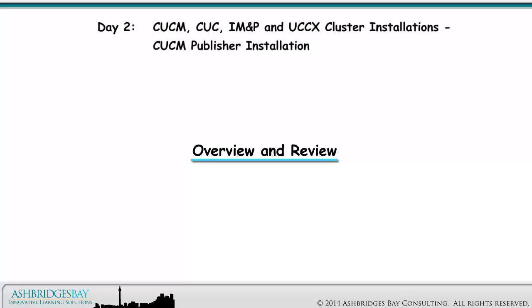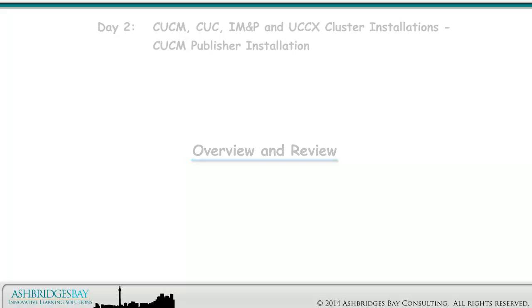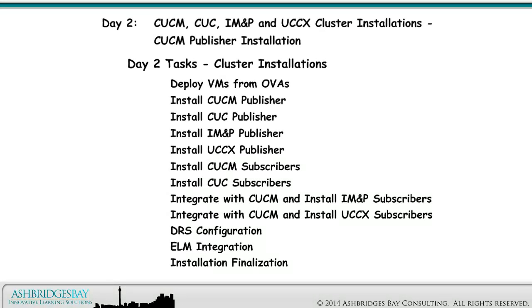Let's start with a quick overview and review. Here are the tasks for our Cisco Collaboration cluster installation and integration. On Day 2 — a literal day — we install our CUCM, CUC, IM&P, and UCCX clusters, activate the services we need in the CUCM cluster, integrate IM&P and UCCX with CUCM, integrate CUCM and CUC with ELM, and configure DRS for all four applications.